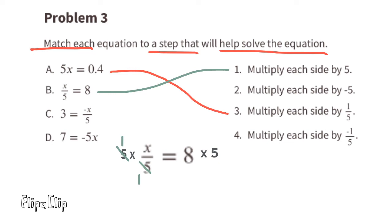Part b: x over 5 equals 8, which is the same as x divided by 5 equals 8. To undo the division, we multiply both sides by 5, because x divided by 5 times 5 gets back to 1x, or x.